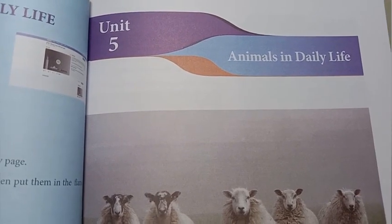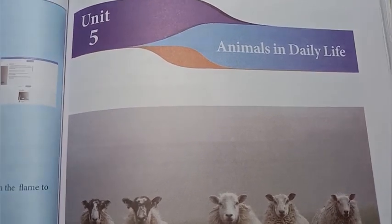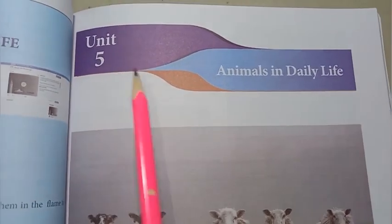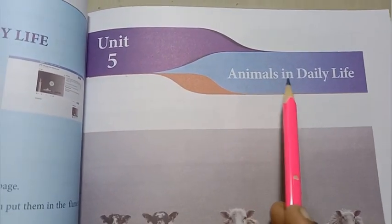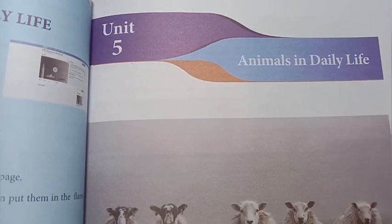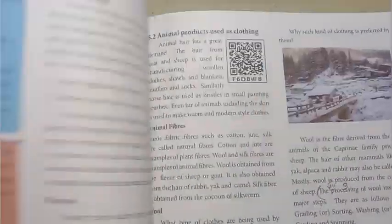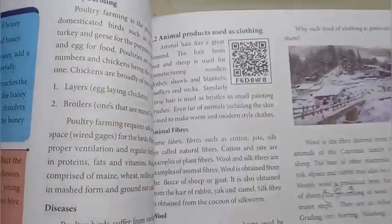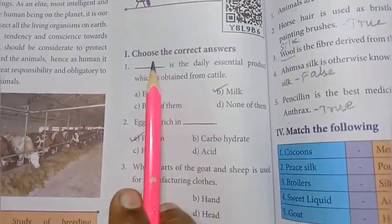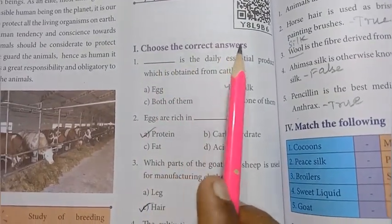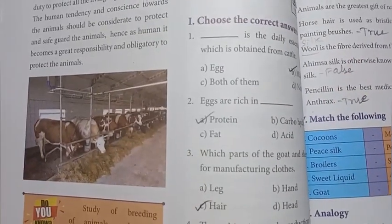7th Standard Science Term 3 Unit 5: Animals in Daily Life. Lesson book back exercise answers. Roman Numeral 1: Choose the Correct Answers.